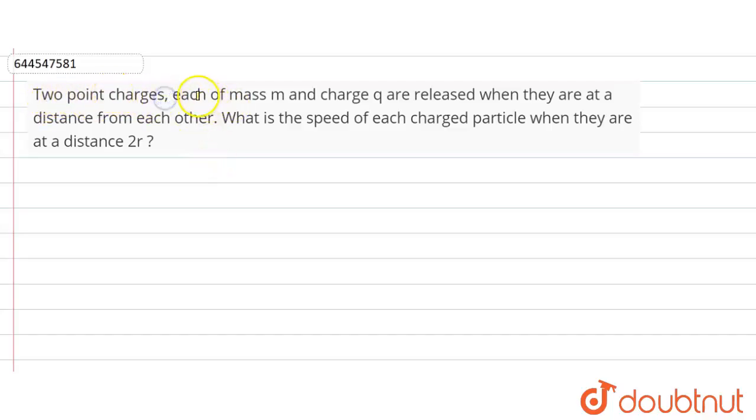Question is given here: Two point charges, each of mass m and charge q, are released when they are at a distance from each other. What is the speed of each charged particle when they are at the distance of 2r?